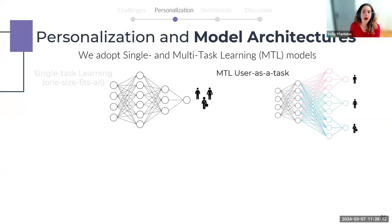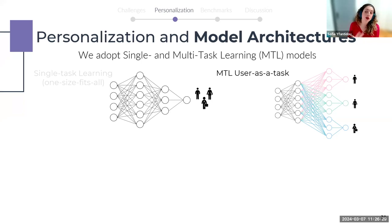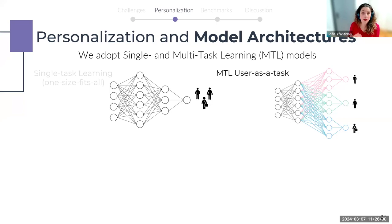A multitask learning model is a network that learns multiple tasks simultaneously. The initial layers of the neural network are shared among users, whereas the later layers are task- or user-specific and thus more personalized to the individual user. Yet this implementation suffers from the cold start problem — if a new user comes, it's very difficult to integrate them into the current model.